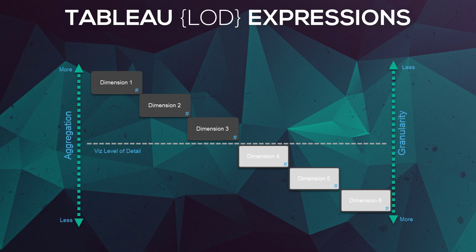As we add more dimensions to our viz, our granularity is increasing — we're getting down to the lowest level of detail, almost back to row level. But as we start summing up and going higher in aggregation, our aggregation increases because we're aggregating by fewer dimensions, so we're not at the lowest level of detail, which is row level.